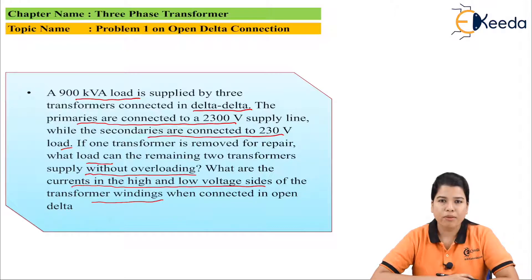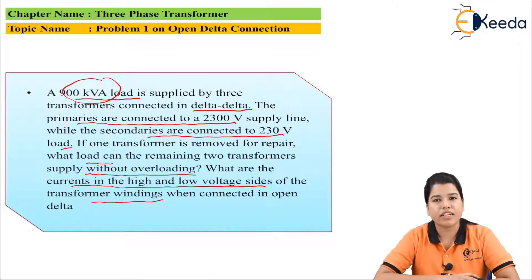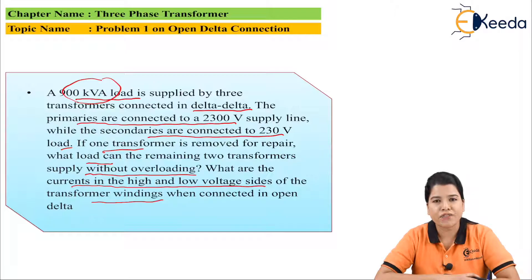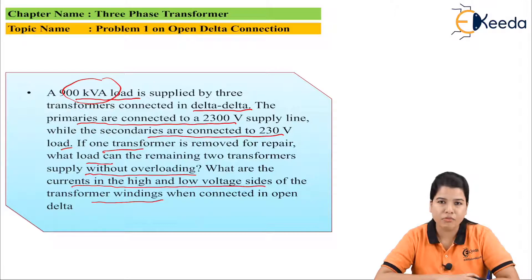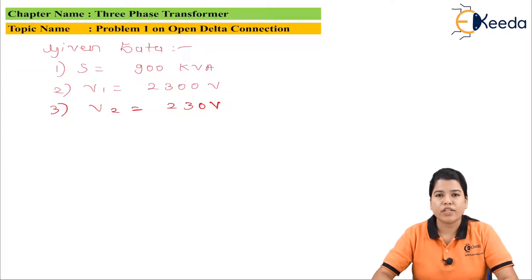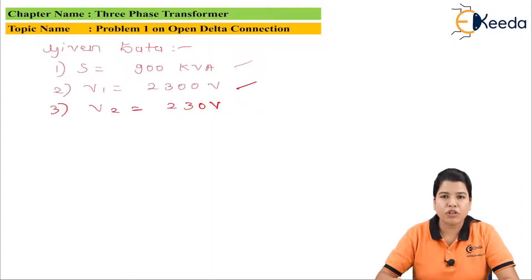Reading this problem carefully: a 900 kVA load is supplied by three transformers connected in delta-delta, and one transformer is removed for repair, so the delta-delta connection now acts as an open delta connection. We have to solve this using the formulas of the open delta connection. The given data is: kVA rating = 900 kVA, V1 = 2300 volts, and V2 = 230 volts.